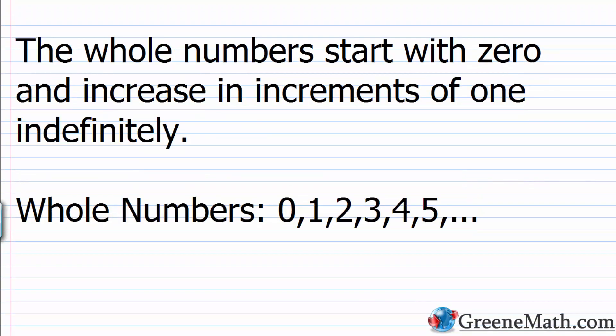Let's begin our lesson by looking at some basic definitions. We'll start by defining a group of numbers known as the whole numbers. The whole numbers start with 0 and increase in increments of 1 indefinitely — meaning forever and ever. There is no largest whole number. No matter how large a number is, we can always add 1 and get to the next largest whole number.